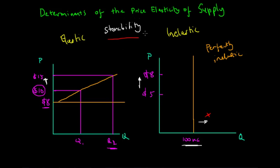To recap the first concept: if you can store the good, the supply curve of that good is relatively elastic; if the good is perishable and cannot be stored, the supply curve is relatively or perfectly inelastic.